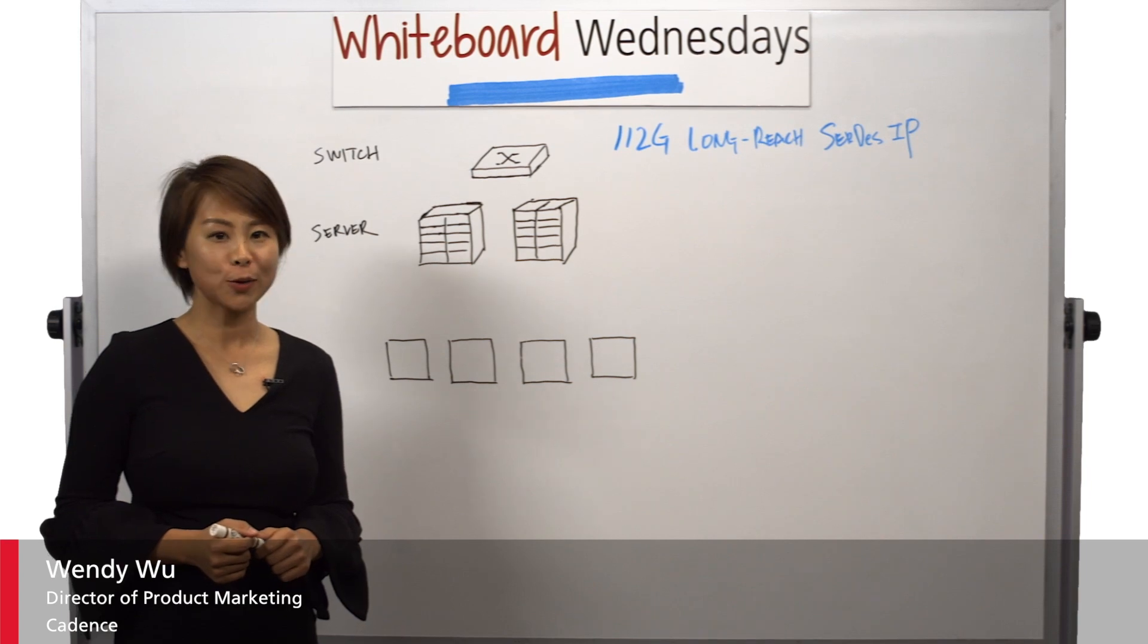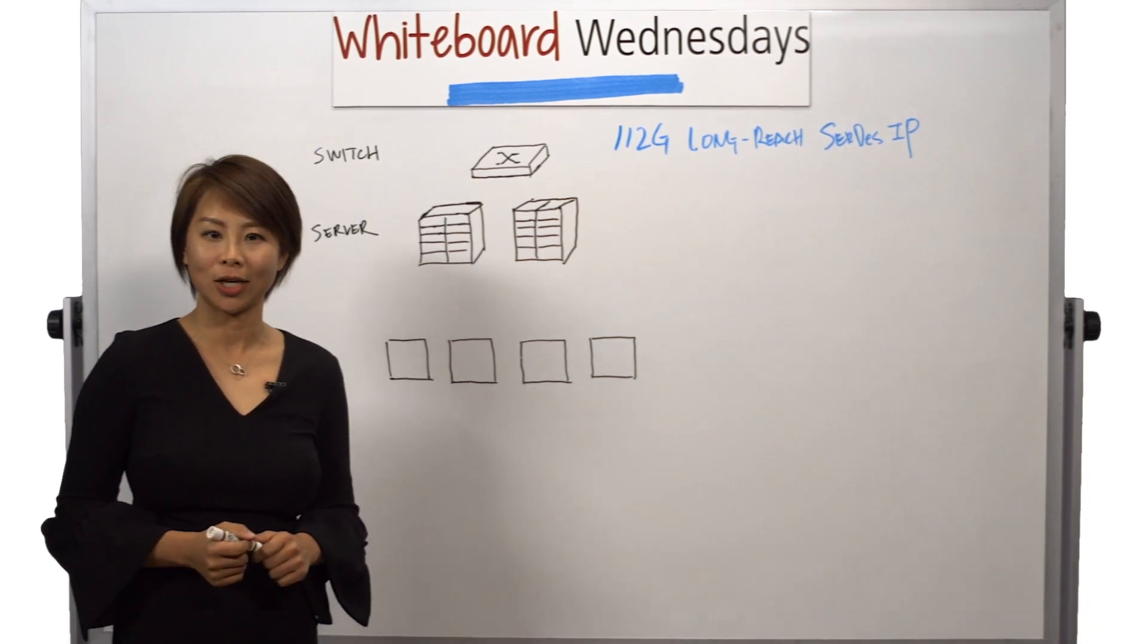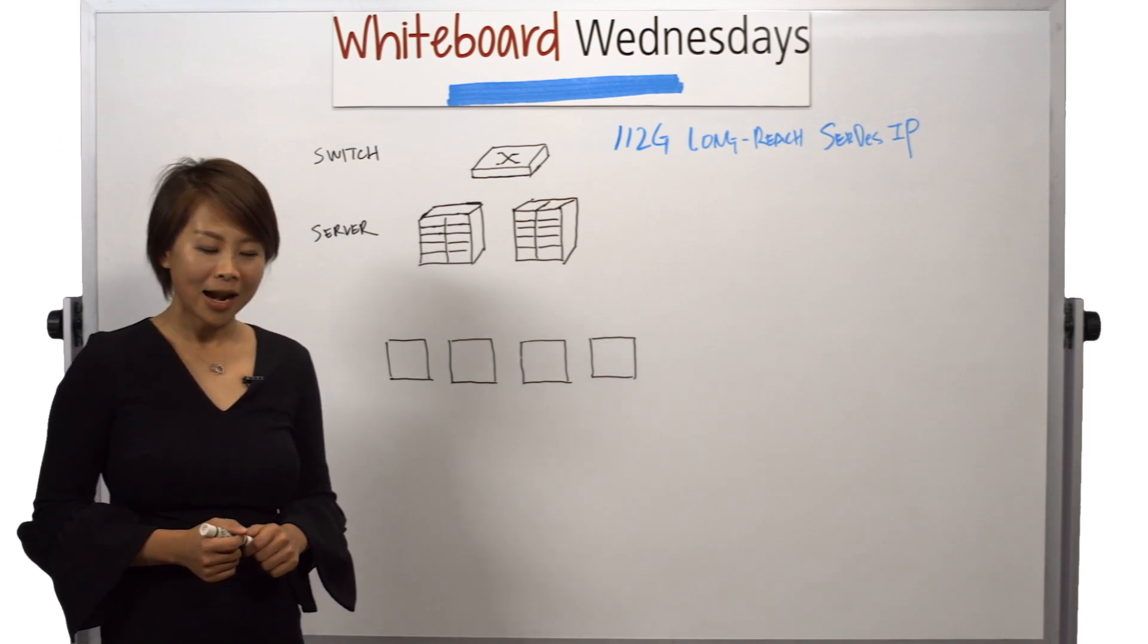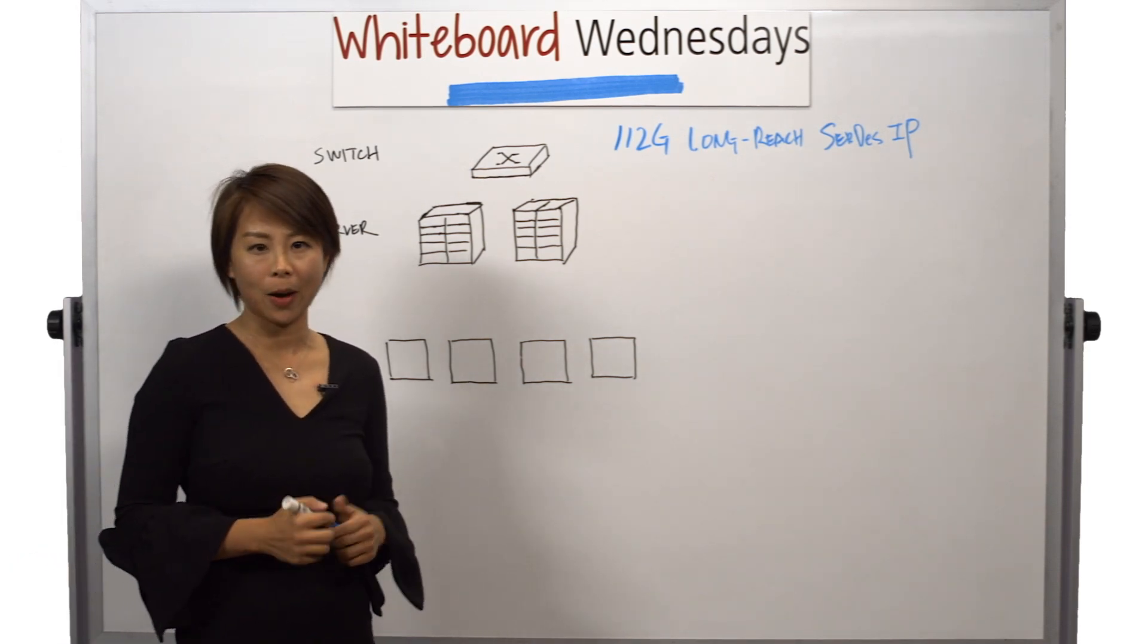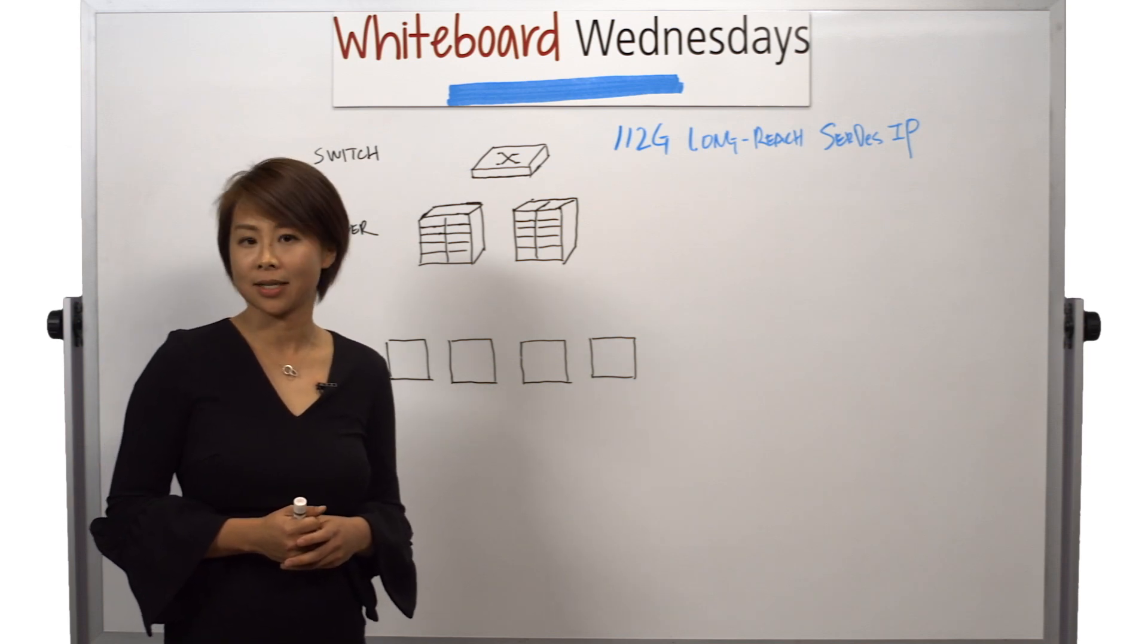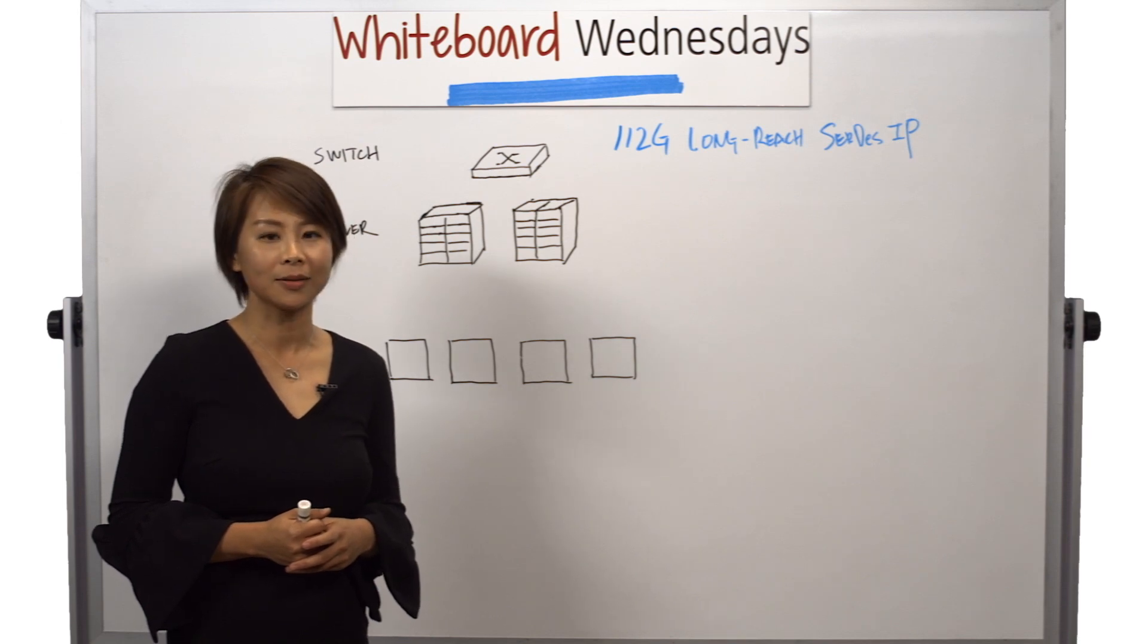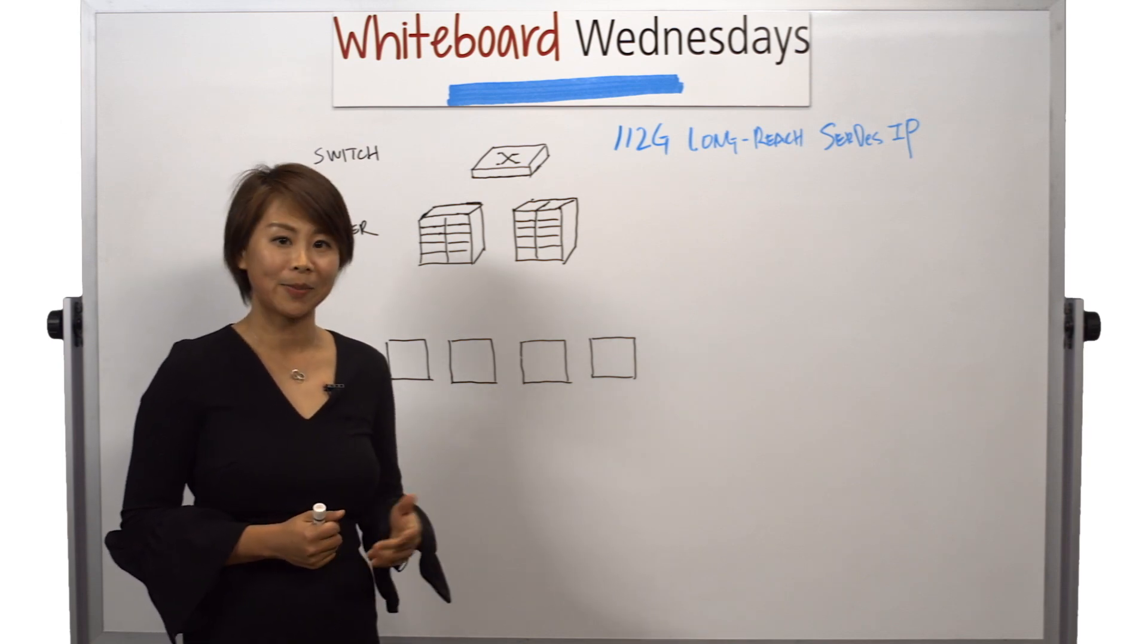Today, I'm here to talk about our newly announced 112G Long-Range SerDes IP. At Cadence, we're super excited about bringing this technology to the market because 112G is essential for enabling the next generation data center network. Why is that? Let me explain.